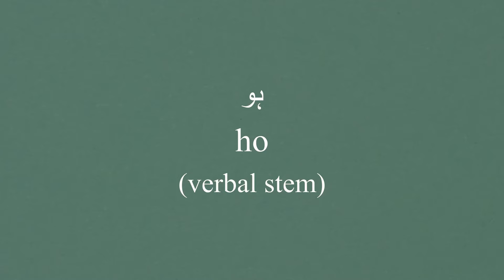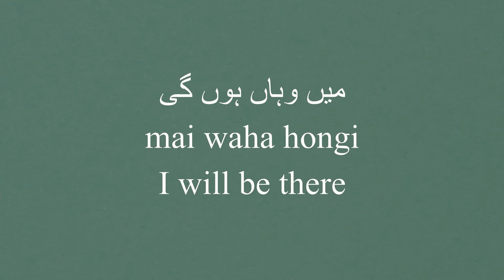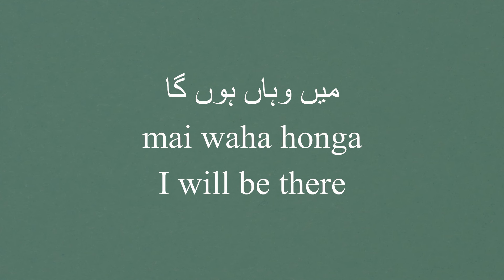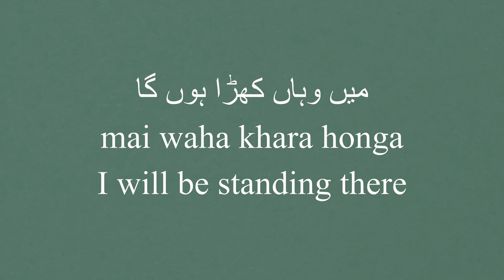'Hona' is our verb, 'ho' is the verbal stem. The suffix is 'ungi' for female and 'unga' for men. 'Main hongi' — I'll be there. 'Main vahan hongi' — I'll be there. 'Main vahan honga' — a man saying I'll be there. 'Main park mein honga' — I'll be in the park. 'Main khada honga' — I'll be standing there. 'Khada hona' means to be standing.